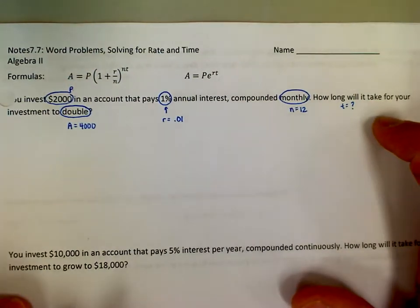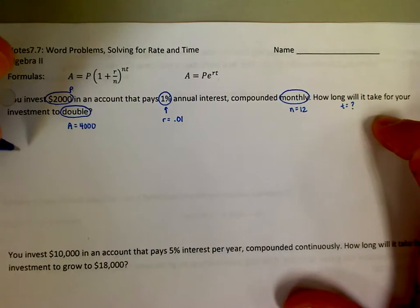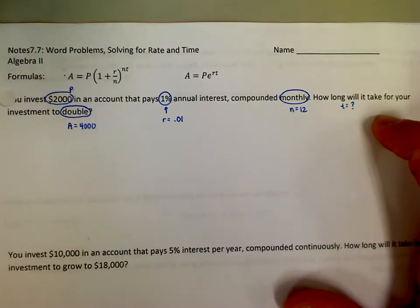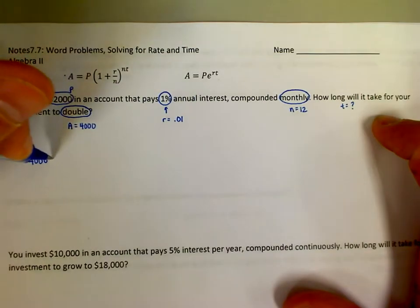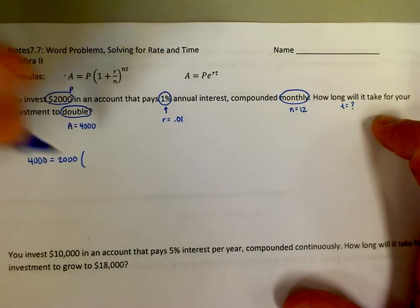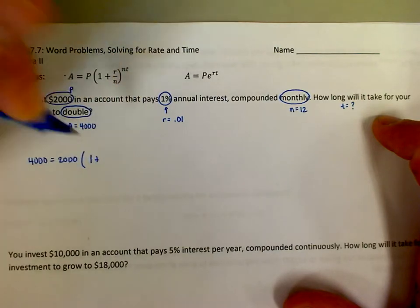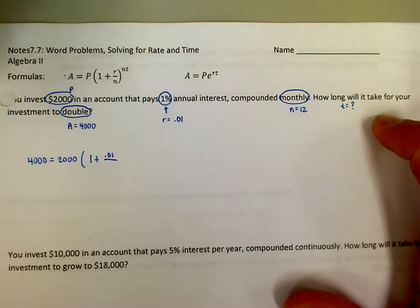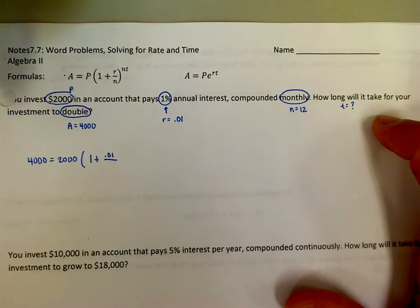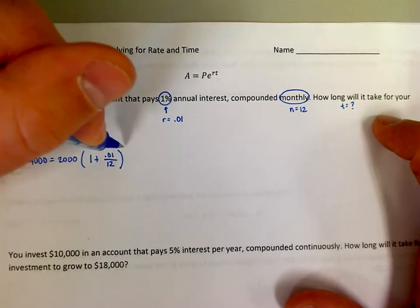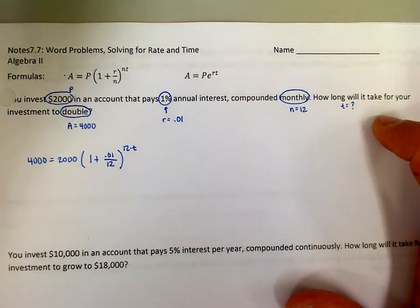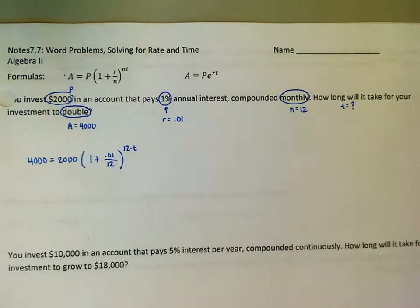I've got everything I need to do this problem. Using the compound interest formula — not continuous interest — we write: 4,000 equals 2,000 times (1 plus 0.01 over 12) raised to the power 12T. If you mess up and put 1 instead of 0.01 in the formula, you'll find your money doubles in six days — that's drastically different. Be very careful about that. Now we need to get T by itself.